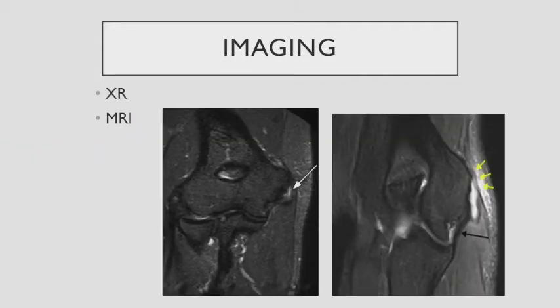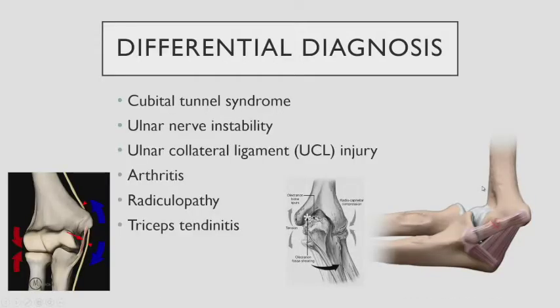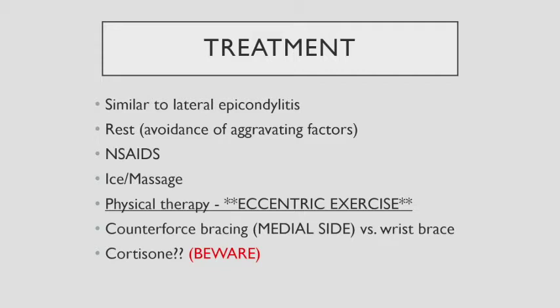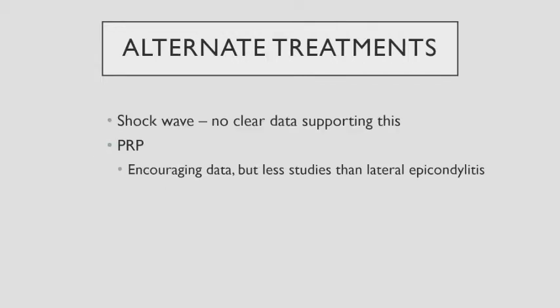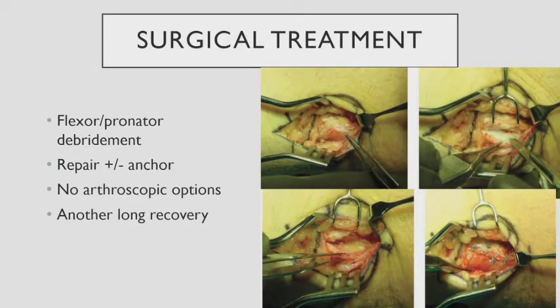Generally you don't want nerve symptoms with normal range of motion. The spectrum can range from small micropartial tears to huge tears of the flexor pronator mass. Differential diagnosis includes cubital tunnel syndrome, ulnar nerve instability, ligament injury, arthritis, radiculopathy, and triceps problems. Treatment is similar: rest, avoidance of activities, anti-inflammatories, ice, massage, physical therapy with eccentric exercises, counterforce bracing, and be wary of cortisone. For golfer's elbow, there's less data — PRP might help but there's not as much encouraging evidence. Surgical intervention — repairing the tendon back to the bone — is ultimately the treatment if conservative treatment fails.